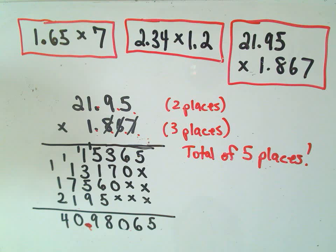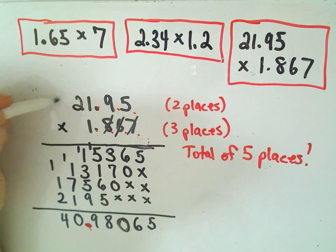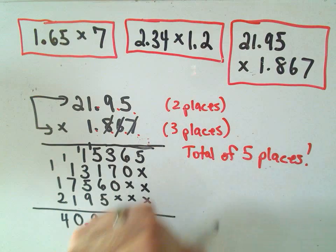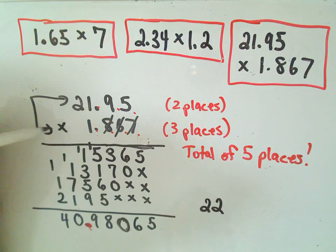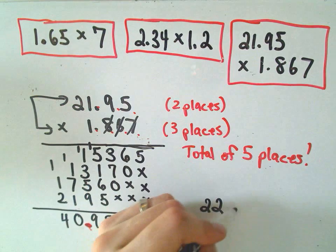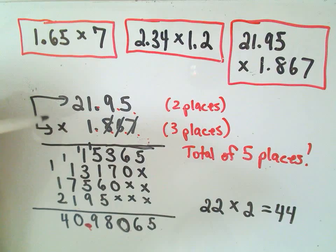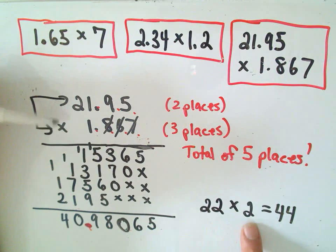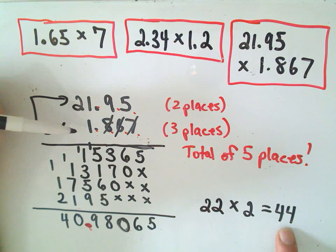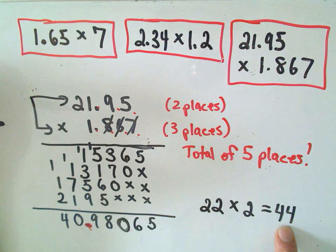One thing I would definitely recommend, just to make sure that you do have the decimal place in the correct place, if we rounded this off, if we took our numbers, 21.95, that's roughly equal to 22 if we round it up. 1.867, that's roughly equal to 2. So if we multiplied 2 and 22, we would get 44. But 22 is bigger than the number that I'm using. 2 is also bigger than the number that I'm using. So I know this estimate of 44 should be a touch bigger than the correct answer. And 44 is a little bit bigger than 40.98065. So that seems like a reasonable answer.